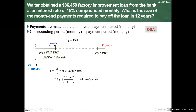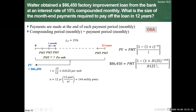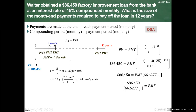The number of payment periods is 12 years times 12 payments per year, giving 144 monthly payments. Using the present value of an ordinary annuity formula — with the negative exponent because we're bringing money back — we plug in 86,450, the periodic rate of 0.0125, and negative 144 for monthly payments. Calculating the bracket terms gives 66.6277... Isolating for payment by dividing each side by 66.6277, we get $1,297.507..., which rounds to $1,297.51 as the required month-end payment to pay off the loan in 12 years.